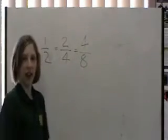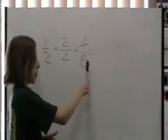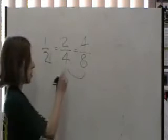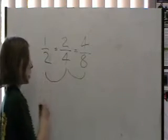So we have 4 eighths. 4 eighths is the same as 2 quarters, and 2 quarters is the same as 1 half.